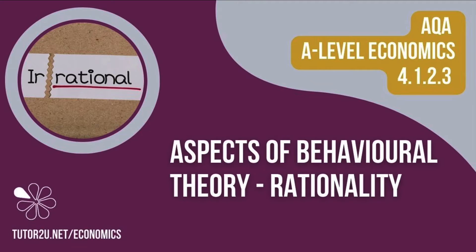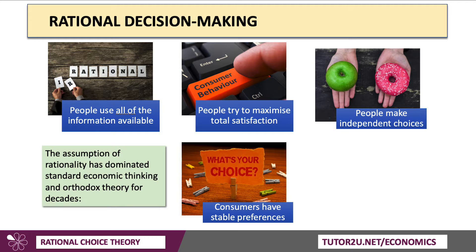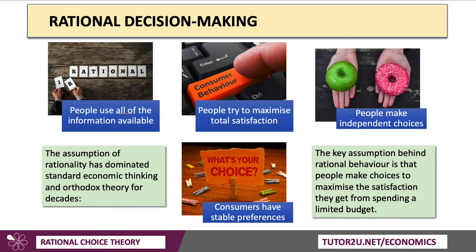In this AQA micro-video, let's spend a few minutes thinking about rationality as a key aspect of behavioural theory. The assumption of rationality has dominated standard economic thinking — orthodox theory — for decades. The idea behind rational decision-making is that people make choices with a limited budget to maximise the satisfaction or utility they get from spending on different goods and services.